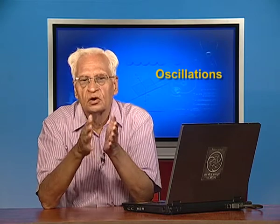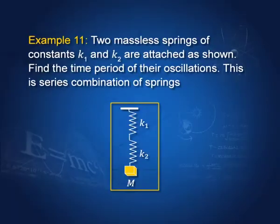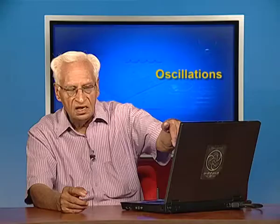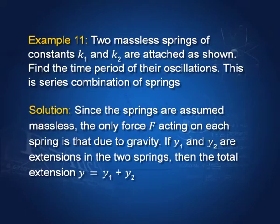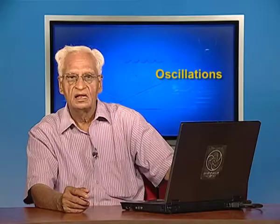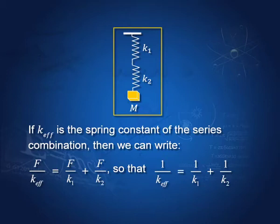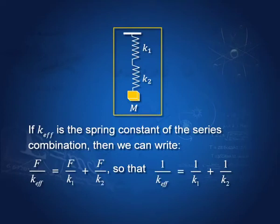Now we have two massless springs of constants k1 and k2 arranged in series. In this arrangement there is just one force stretching both springs. If y1 and y2 are the displacements of the two springs, then the total displacement is y = y1 + y2. With k_effective as the effective spring constant, F/k_eff = F/k1 = F/k2, so that 1/k_eff = 1/k1 + 1/k2.